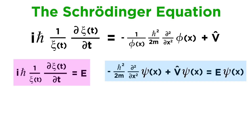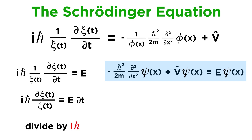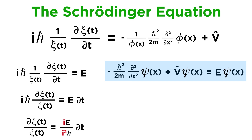Now let's return to the time-dependent equation involving ψ(t) and see if we can solve it for ψ. First let's do something that may seem strange: multiply both sides by dt. It may seem counterintuitive to break up this notation signifying a partial derivative, but we will see in a moment precisely what this allows us to do mathematically. To simplify further, let's divide both sides by i·h-bar. That gets rid of them on the left, and on the right we get E over i·h-bar times dt. Preferring to have imaginary terms in the numerator, let's multiply by i over i — that puts i on top, i squared on the bottom, and since i squared equals negative 1, the whole term becomes negative.